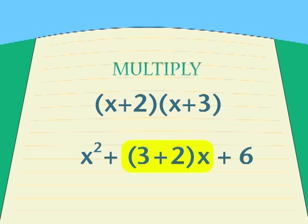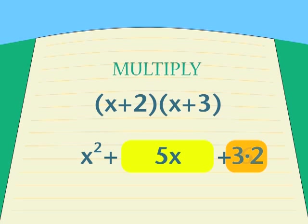We could combine that into 5x, but we won't. For now, we want to recognize the pattern, and the same pattern is there, 3 plus 2 in the middle term, and 3 times 2 in the final term. We can simplify the final answer to x squared plus 5x plus 6.